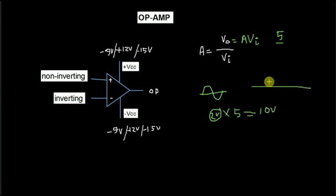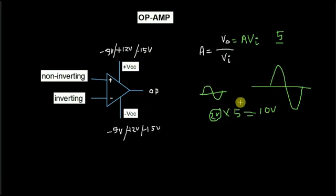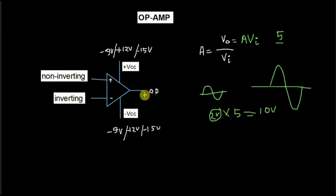So we amplify the signal. We give 2V peak-to-peak input, gain is 5, input 2 multiplied by 5 equals 10V, and the output is 10V peak-to-peak.